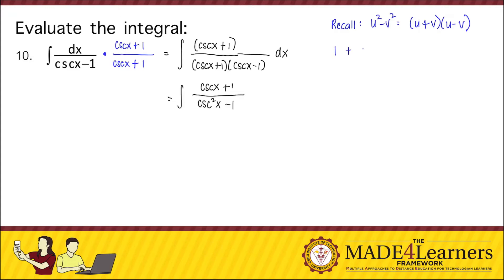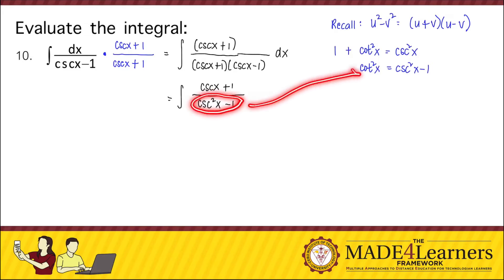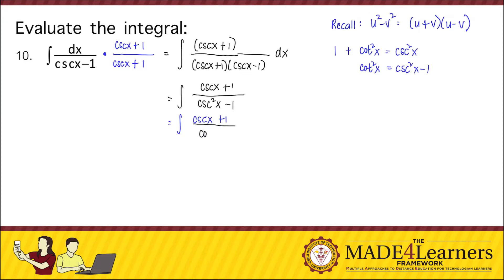We recall from our Pythagorean identities that 1 plus cotangent squared x equals cosecant squared x. Therefore, cotangent squared x equals cosecant squared x minus 1. Therefore, this expression in our denominator is equal to cotangent squared x. So replacing that, we have the integral of cosecant x plus 1 over cotangent squared x, dx.